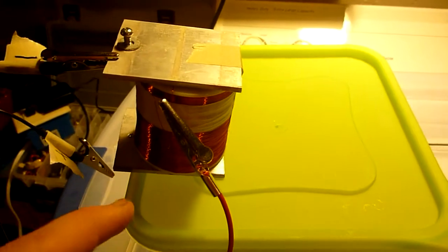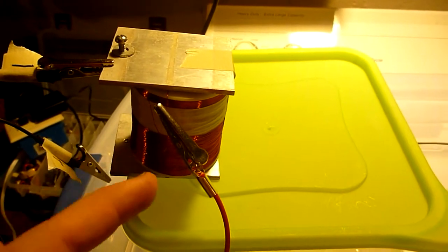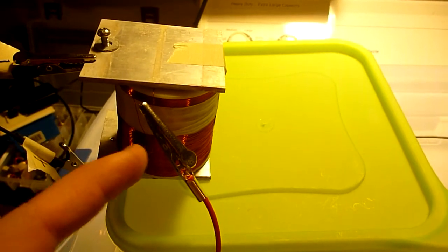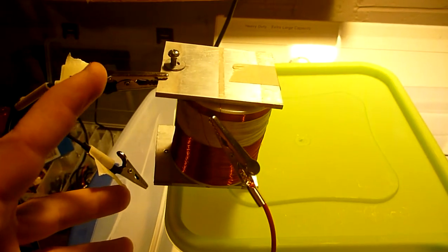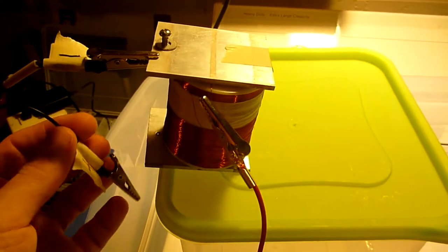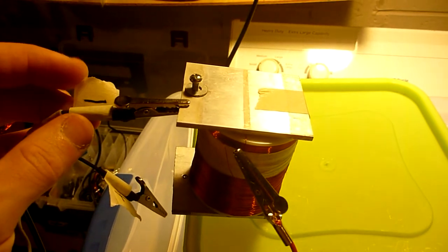So here we have two aluminum plates and in the middle we have 30 gauge copper spool of wire. And across these plates we have DC power supply, but as you can see the positive is disconnected. So the only thing we have connected is the negative.